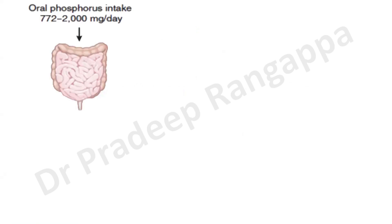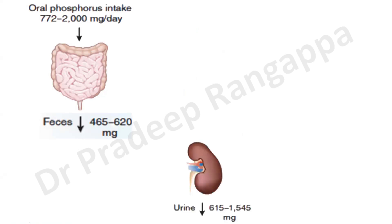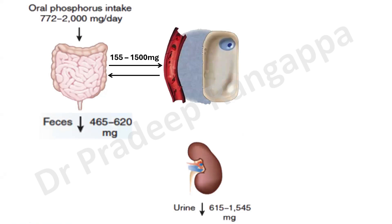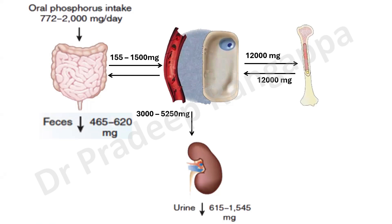Looking at phosphate metabolism: the average oral phosphorus intake is around 772 to 2000 milligrams. Most of the phosphorus is excreted in the feces — around 465 to 620 milligrams — and a similar or slightly greater quantity is excreted by the kidneys. When phosphorus is taken, it gets redistributed into the extracellular fluid, plasma, and bone. Around 155 to 1500 milligrams is distributed in plasma and extracellular fluid.